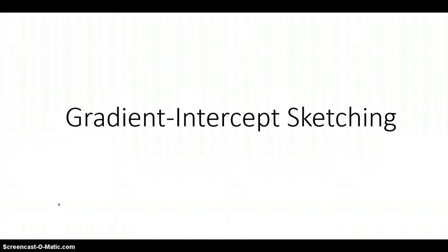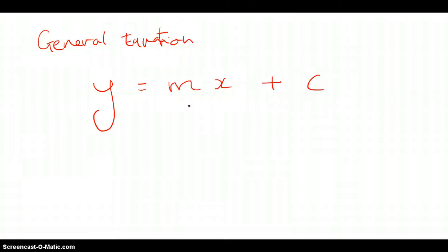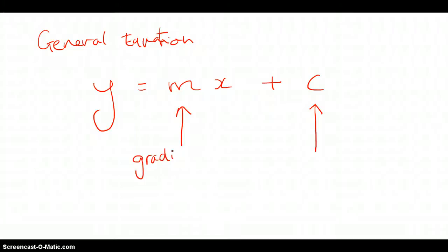Before we look at the gradient intercept sketching method, we're going to quickly revise what we need to know with linear formulas. The general equation of a linear graph is y = mx + c. There are two things to take from this equation: m, which is otherwise known as the gradient — also known as rise over run — and the last part, c, which is known as the y-intercept.